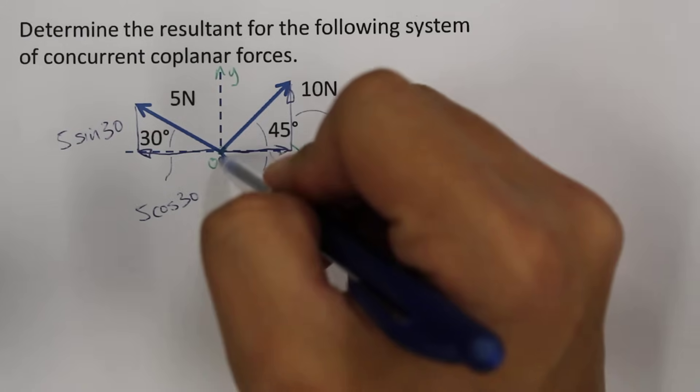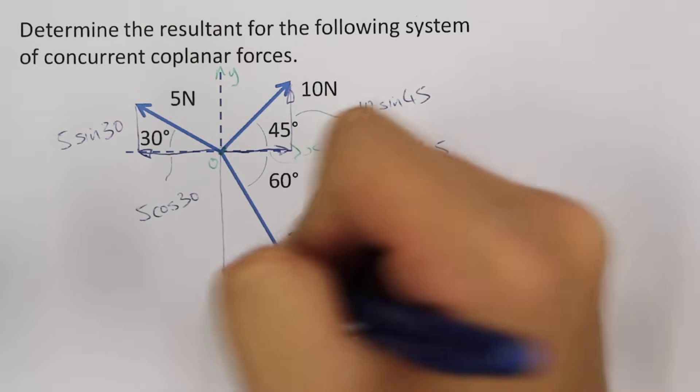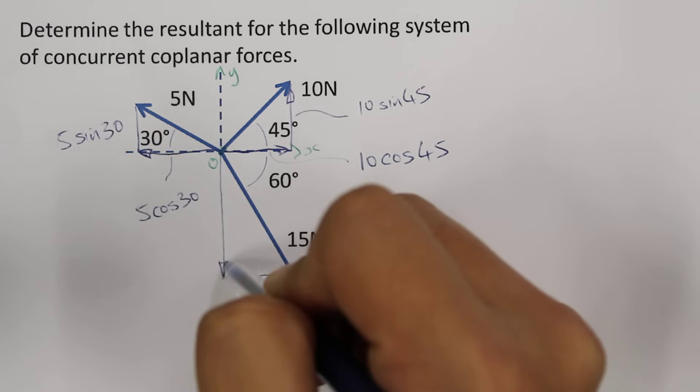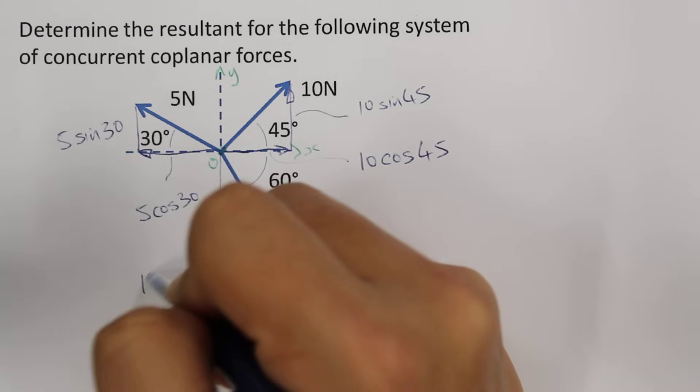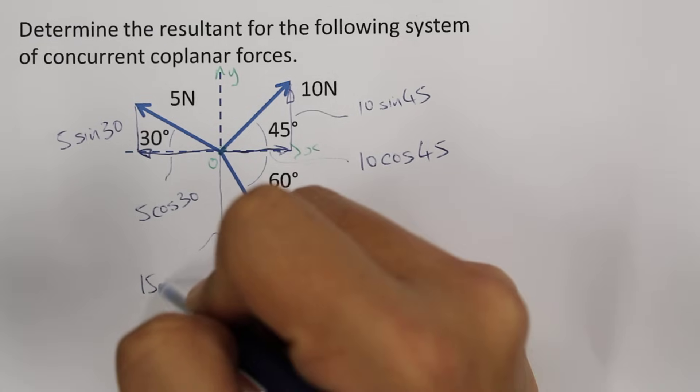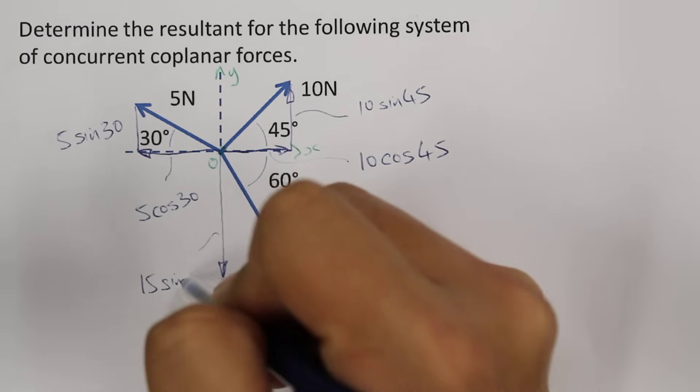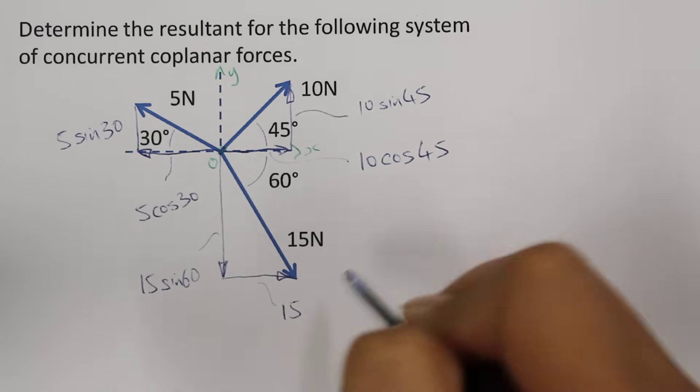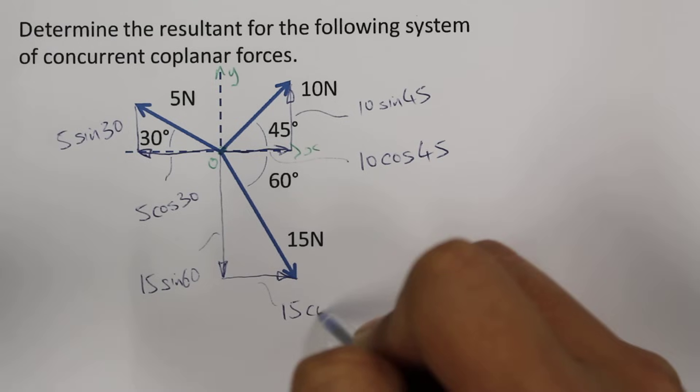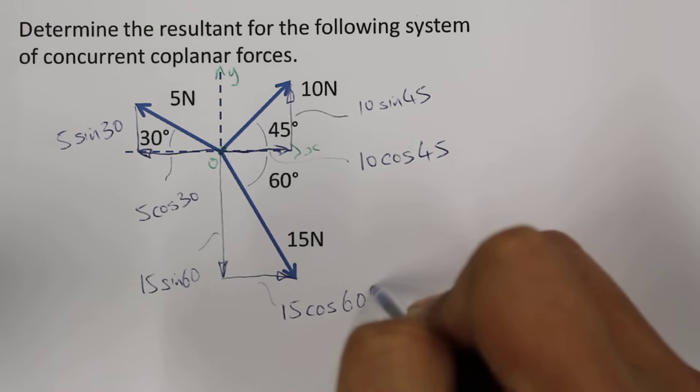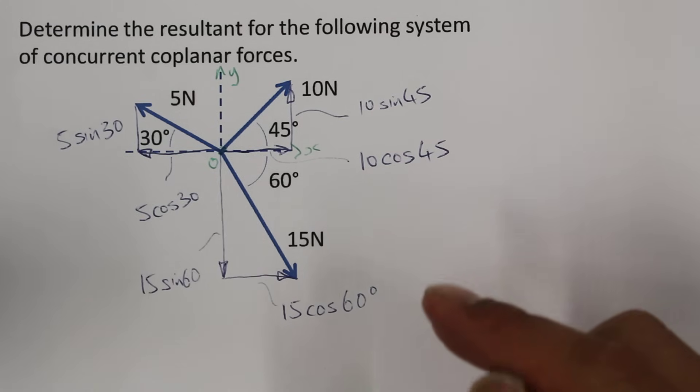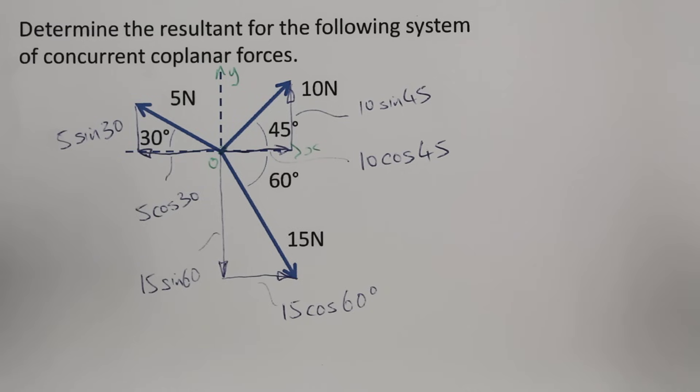The 15N force can be resolved into a y-component and an x-component. The y-one is pointing downwards. This will become 15 sine 60, and this component here would become 15 cosine 60. If you need a review of finding force components, there will be a video made available.